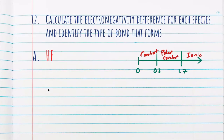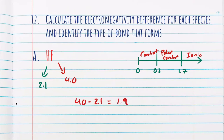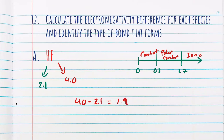Next up, we have hydrofluoric acid (HF). Hydrogen has an electronegativity of 2.1, while fluorine has an electronegativity of 4.0. When we find the difference — 4.0 minus 2.1 — we get 1.9. Looking at our chart it says ionic; however, we have two non-metals, so in this case it would just be a polar covalent bond. Again, our charts are only estimations.